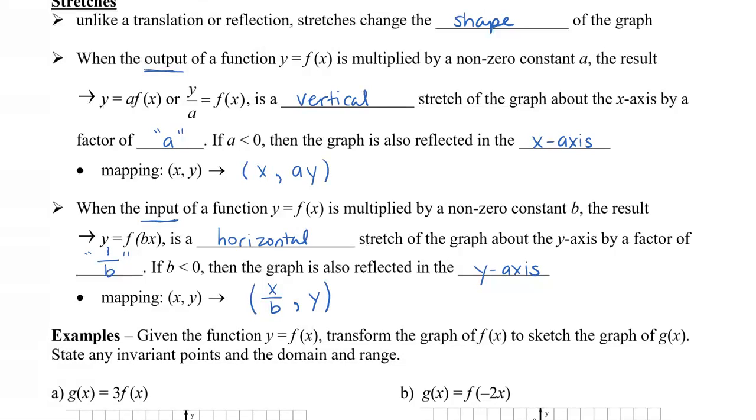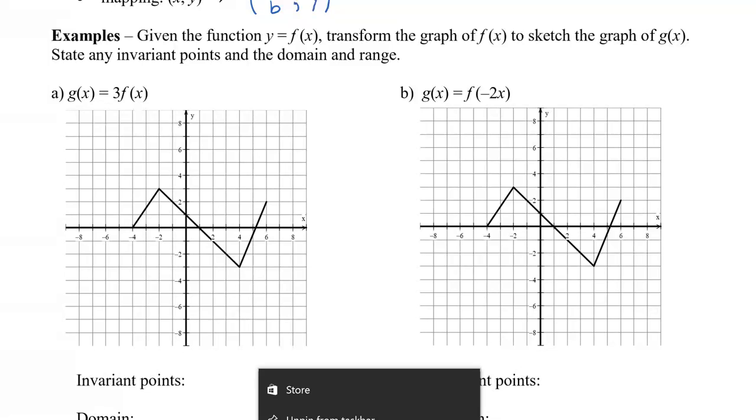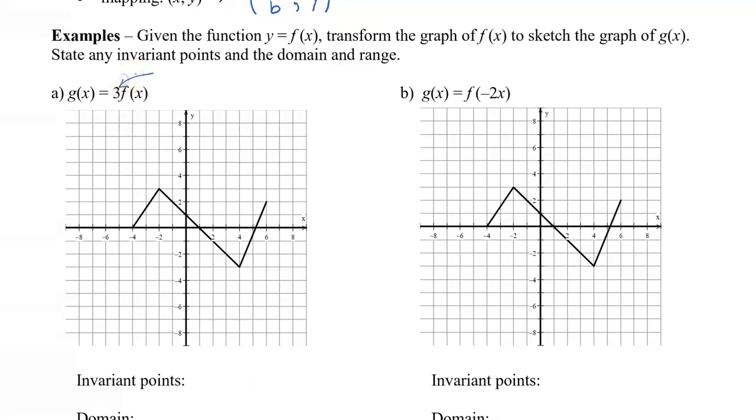So let's take a look at a couple of examples. So given the function that's drawn here, transform the graph of f of x to sketch the graph of g of x. State any invariant points and the domain and range. So we have this graph here, which is like a zigzag. And we can see that there's a 3 here. So this 3, because it's being multiplied by f of x, we know that one's vertical. And I'm going to be more specific than just saying it's a stretch. So because it's vertical and it's 3 times my original y value, it's also going to be actually an expansion.